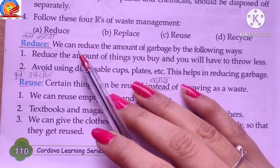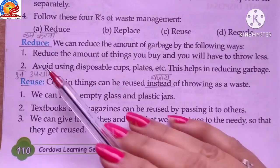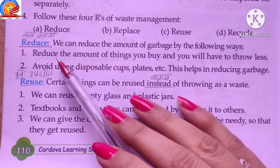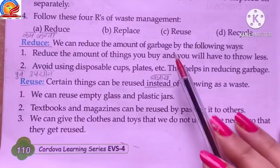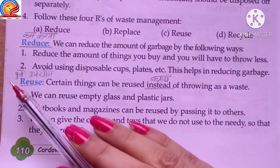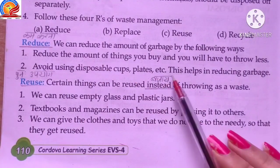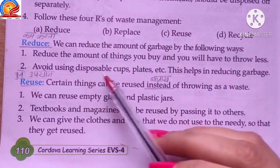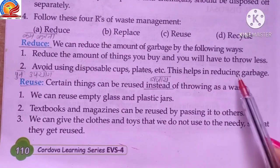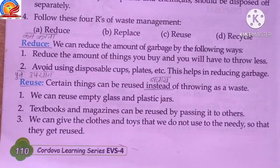Reduce (कम करना): We can reduce the amount of garbage in the following ways. First, reduce the amount of things you buy and you will have less to throw away — buying fewer things means less wastage. Second, avoid using disposable cups and plates; this helps in reducing garbage, as not using such items means less waste.